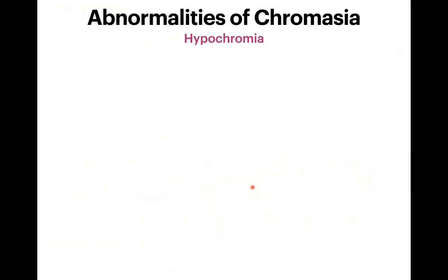To summarize size abnormalities: we covered anisocytosis, when to make a smear, microcytosis and macrocytosis with their age-related physiological considerations. We now move to abnormalities of chromasia. The first is hypochromasia.